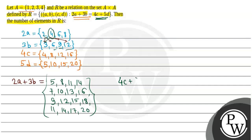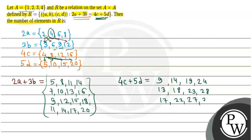Next, we find the 4C plus 5D set. Adding each element of 4C with each element of 5D: 4+5=9, 4+10=14, 4+15=19, 4+20=24; 8+5=13, 8+10=18, 8+15=23, 8+20=28; then from 12 and 16 we get elements 17, 22, 27, 32 and 21, 26, 31, 36. These are the elements of 4C plus 5D.